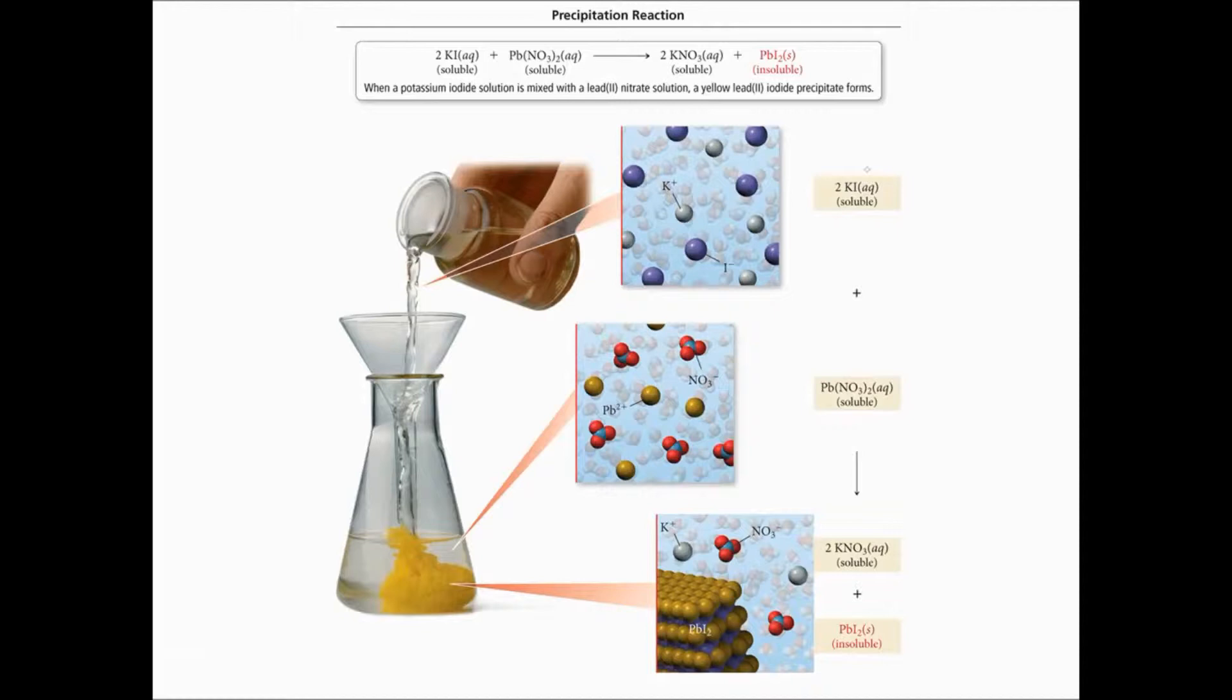So here, you can see that because these are strong electrolytes, the two compounds here, potassium iodide and lead 2 nitrate, both dissociate. The potassium iodide dissociates to form K+ and I-. While the lead 2 nitrate dissociates to form Pb2+ and NO3-.